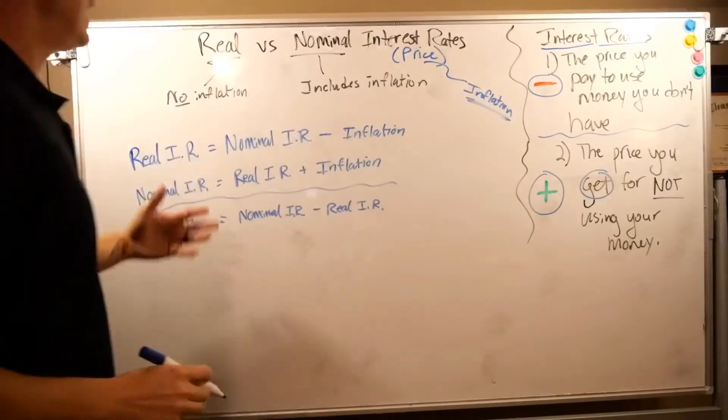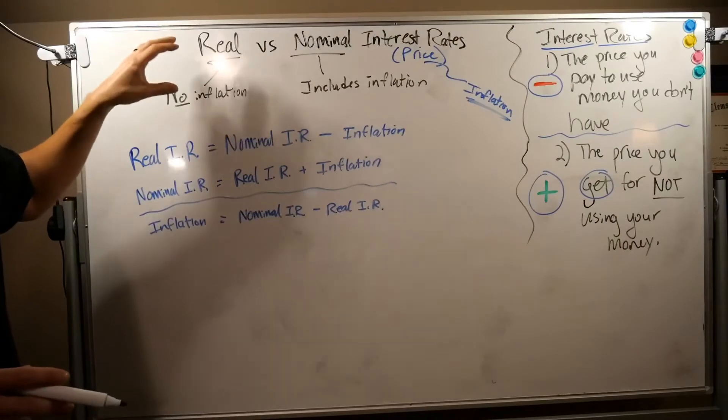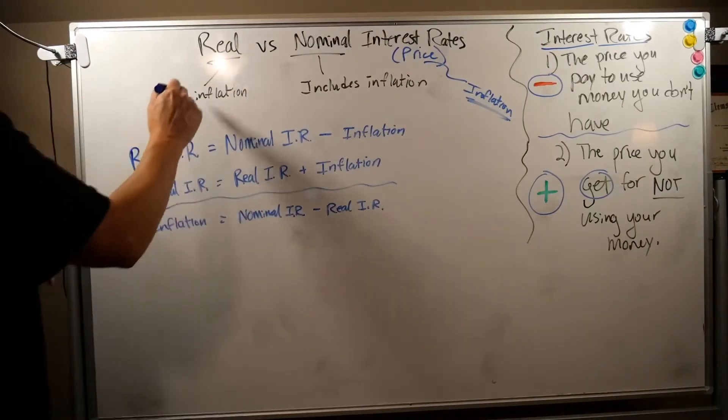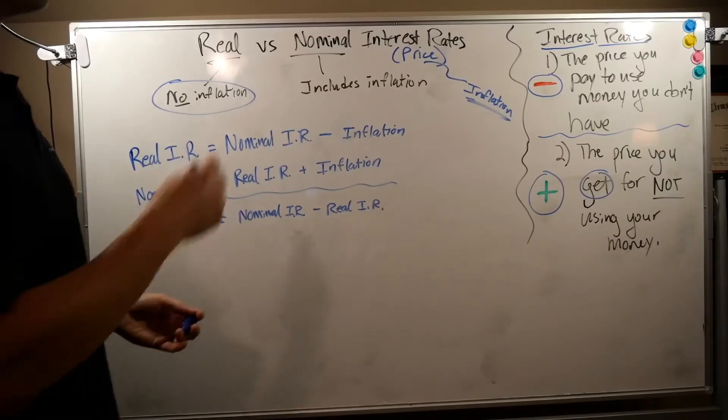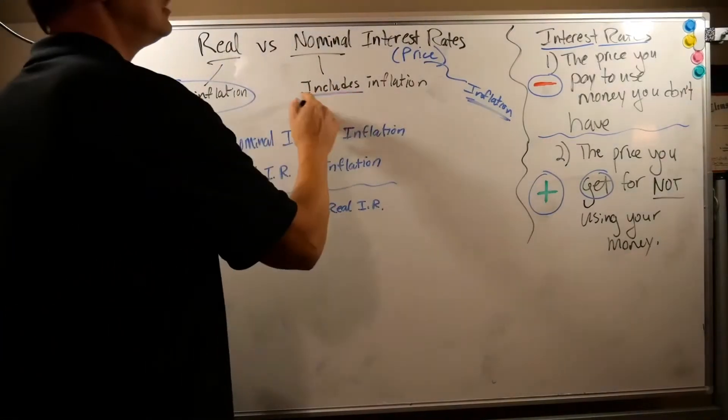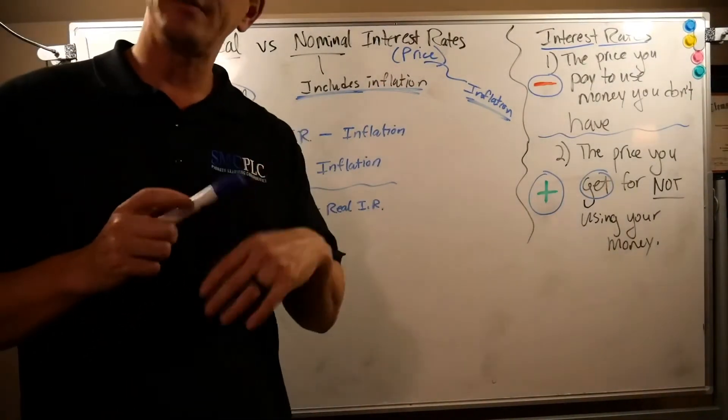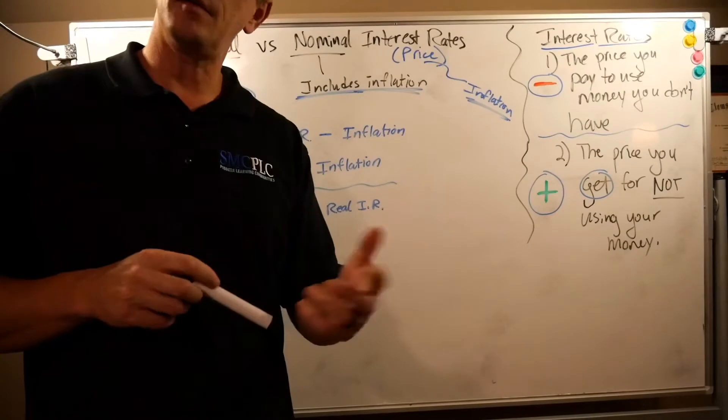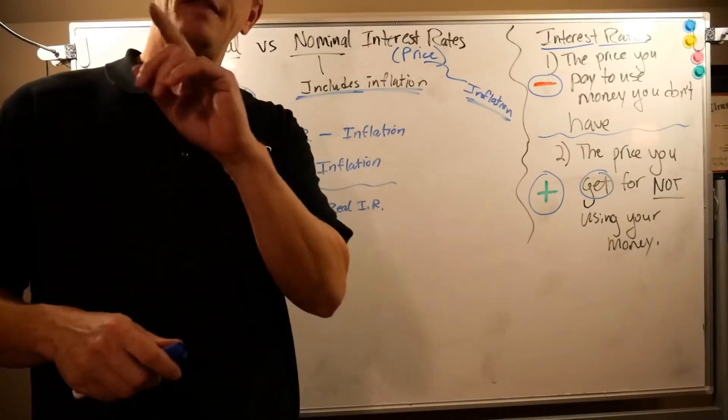Now, real prices, if you remember from before because we talked about real and nominal prices in the last chapter talking about GDP, have no inflation. Nominal prices or nominal interest rates include inflation—it's just whatever the market rate is today. But that doesn't tell you what it was last year and how much inflation there was.